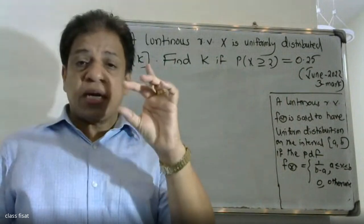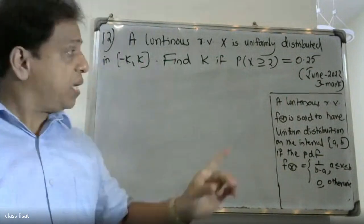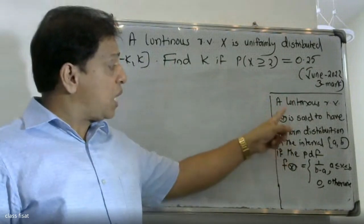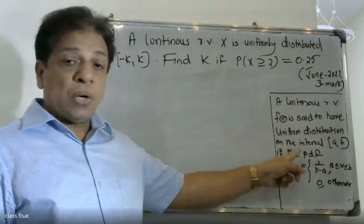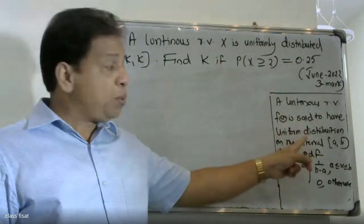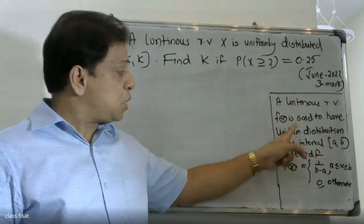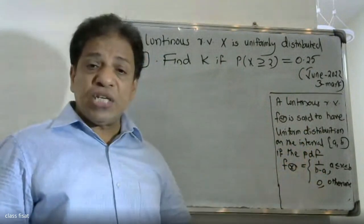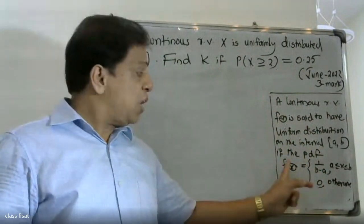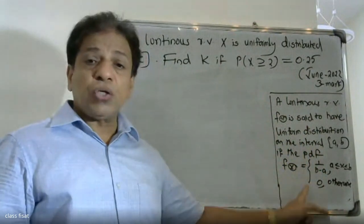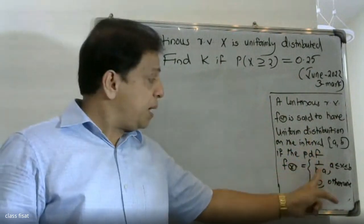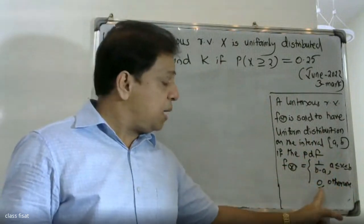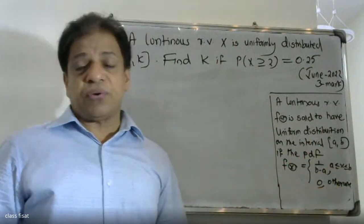Definition number 25: a continuous random variable f of x is said to follow uniform distribution on a, b if the probability density function f of x is equal to 1 by b minus a, for a less than or equal to x less than or equal to b, and 0 otherwise.